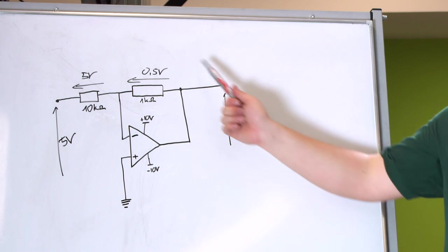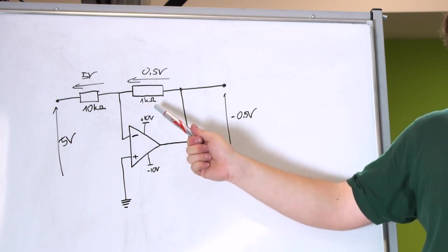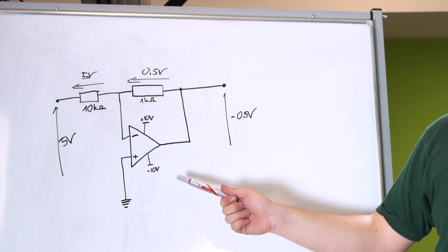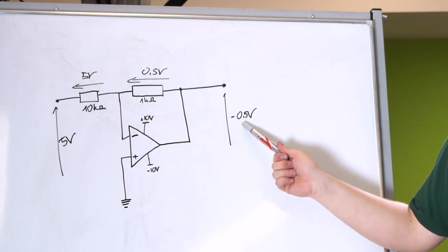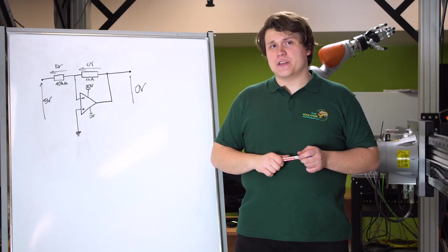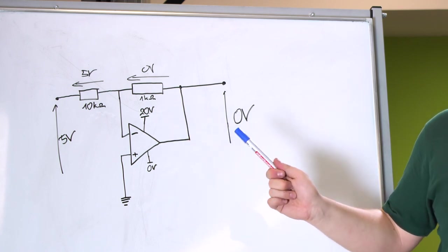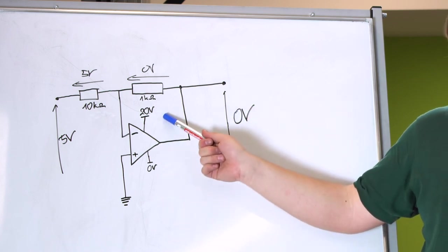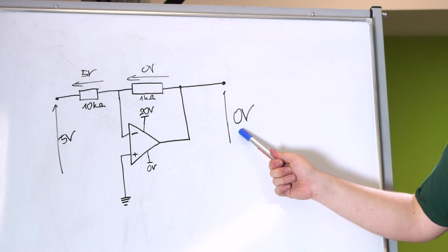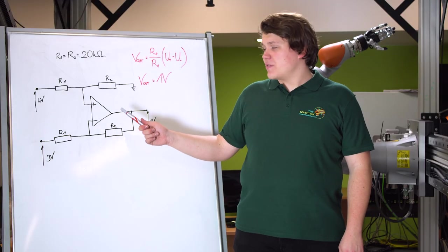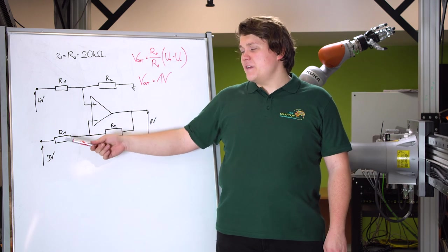Here we have an inverting amplifier powered symmetrically from -10 to +10 volts, with resistors selected so the amplifier suppresses the signal 10 times. When the input voltage is 5 volts, the output voltage will be -0.5 volts. Here is another inverting amplifier but powered asymmetrically from 0 to 20 volts, so the output can only change from 0 to 20 volts — meaning we cannot get -0.5 volts; instead we will have 0 volts on the output. This system is called a subtracting or differential amplifier — it amplifies the difference between the inputs.